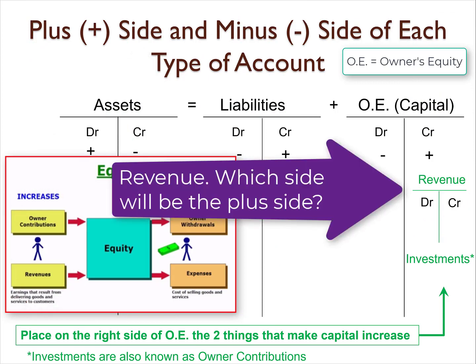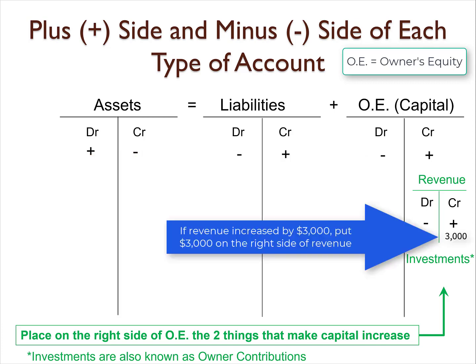Let's talk about revenue first. We record revenue whenever we sell something. And because revenue increases capital, revenue has its plus side on the same side that capital has it — the right side. So that means revenue would decrease on the left side. So if we sold a service for $3,000, that means revenue is increasing, so we would place $3,000 on the right side of our service revenue account.